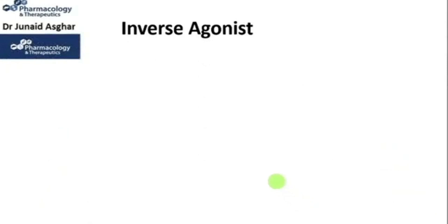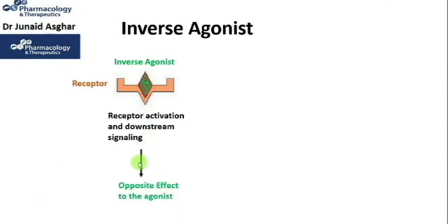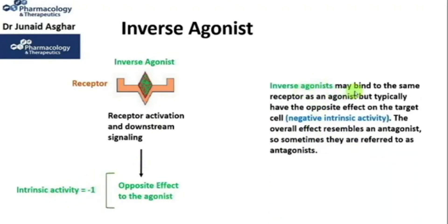Let's see what is an inverse agonist. An inverse agonist, as the name implies, is an agonist which binds to its receptor and produces an effect opposite to that of the agonist. The intrinsic activity or intrinsic efficacy of such an agonist is minus 1. Inverse agonists may bind to the same receptor as the agonist but typically have the opposite effect on the target cell — we call it negative intrinsic activity or minus 1 activity. The overall effect resembles an antagonist, so sometimes they are referred to as antagonists.